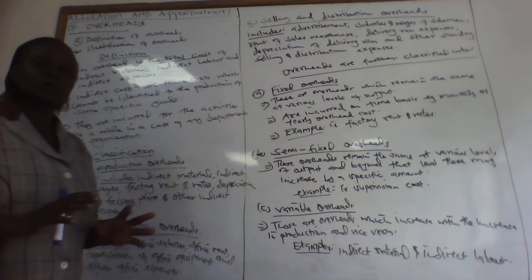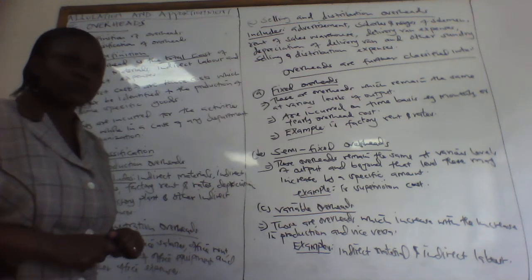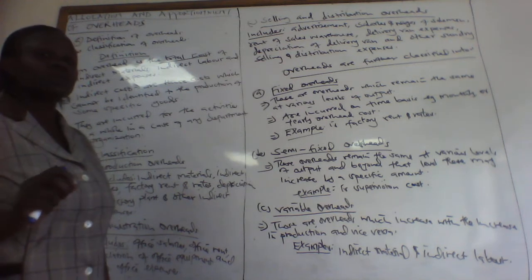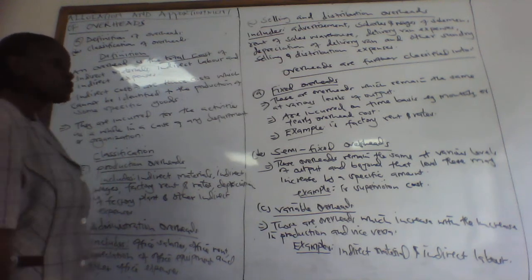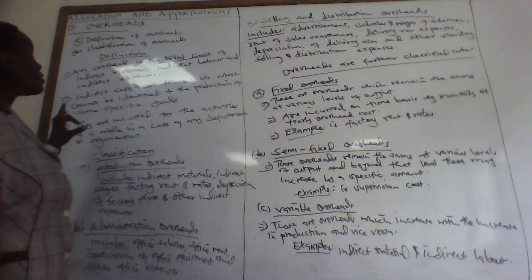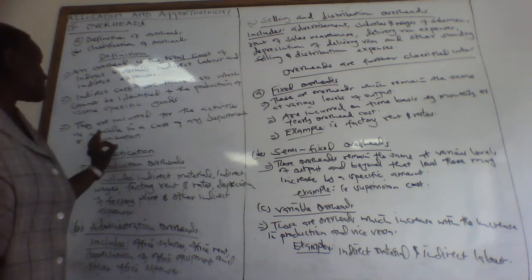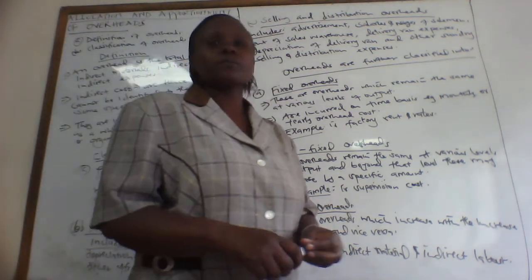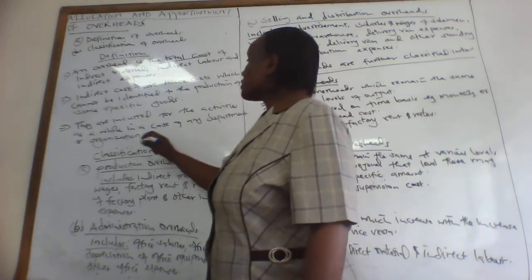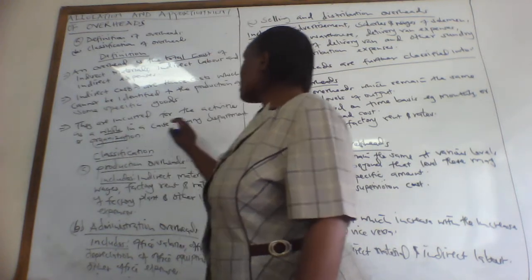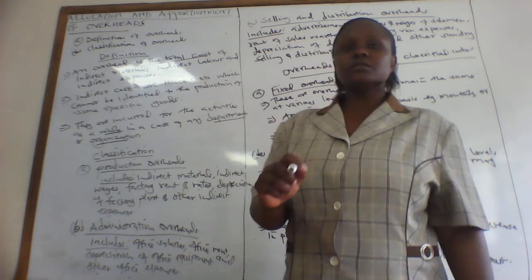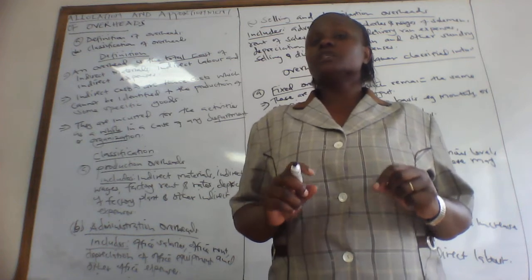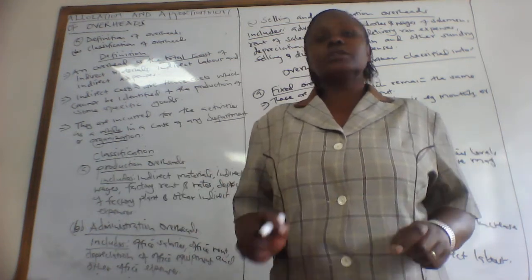These are costs which you are not able to account for any specific production or production output. These overheads are incurred for the activities as a whole, in the case of a department or an organization. You cannot say that this cost was incurred because of producing a particular product - it is for the whole organization or the whole department.